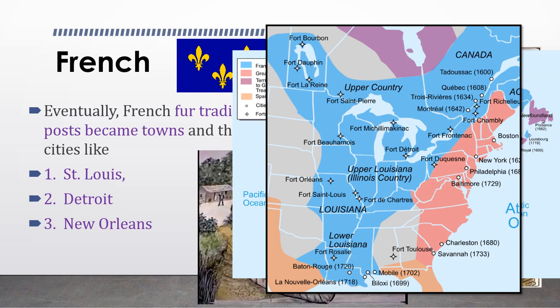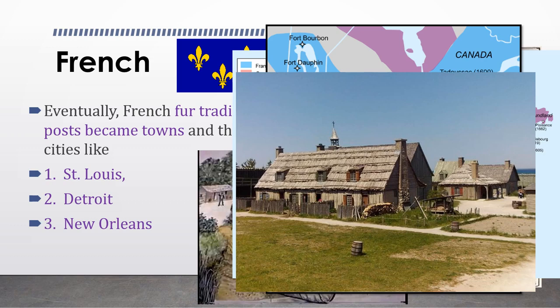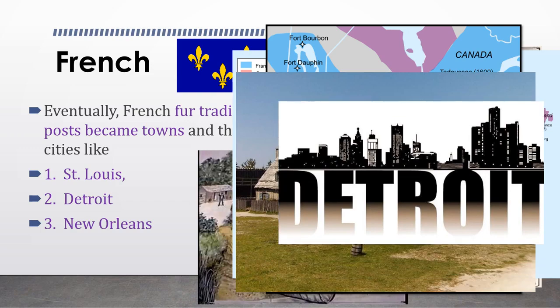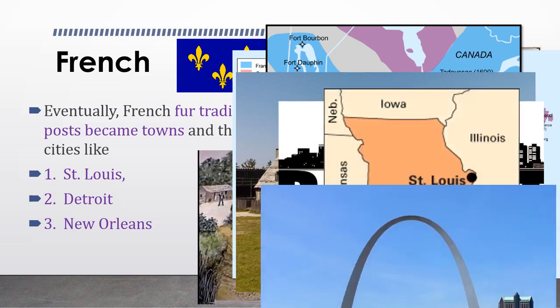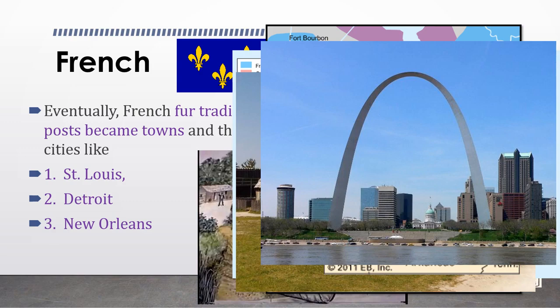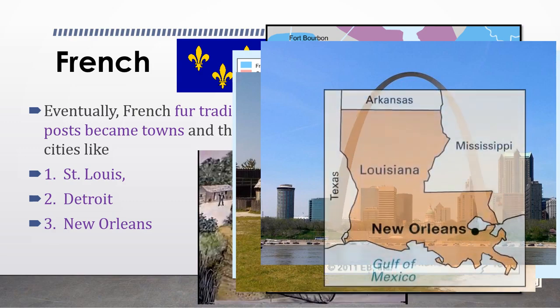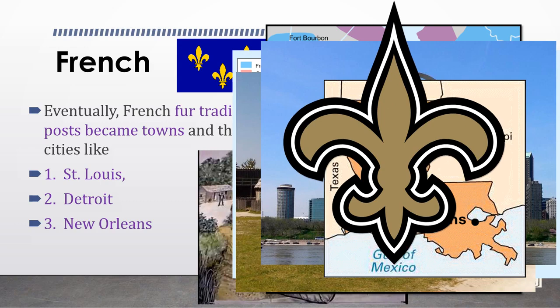Do you recognize any of these forts? Fort St. Louis on the Mississippi, Fort Detroit on the Great Lakes, Fort St. Louis on the Great Lakes, and the French way of saying New Orleans. The French cultural presence in these major cities today goes all the way back to the fur trading days, when these towns were forts and trading posts — recognized today in architecture like the St. Louis Arch and sports like the New Orleans Saints.